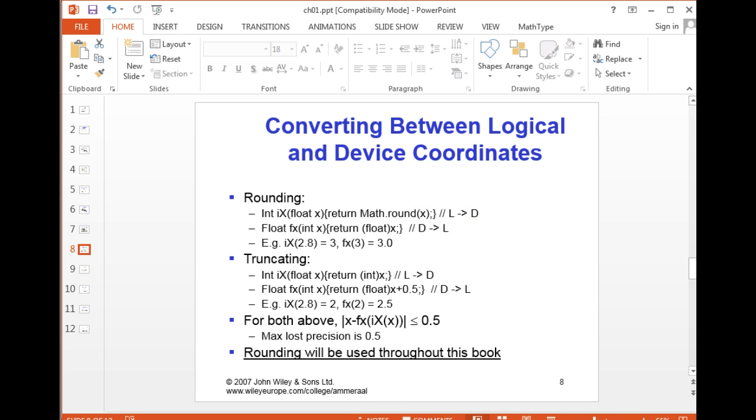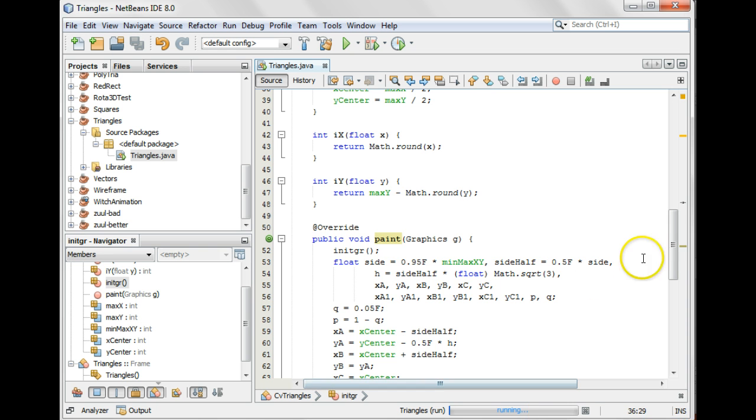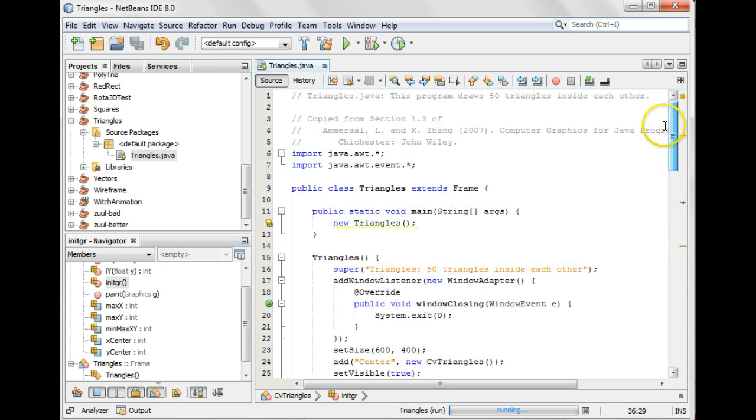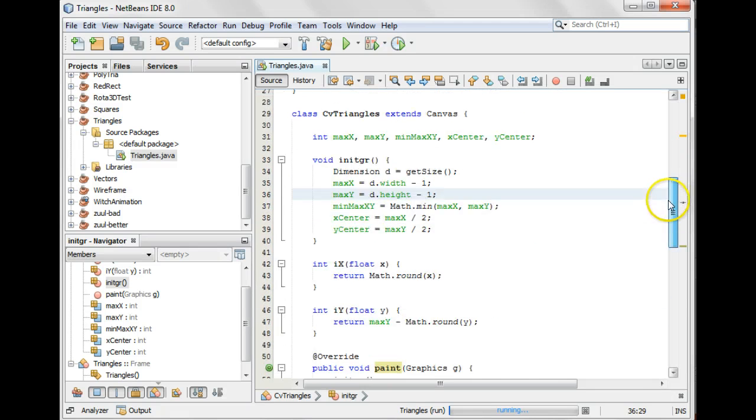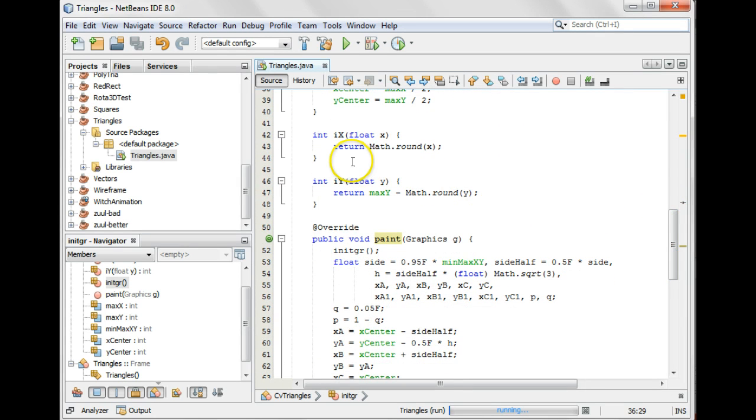Let's see what that looks like in code. This is the triangles example from section 1.3. You can see right here these are the methods used to convert from logical coordinates to device coordinates.